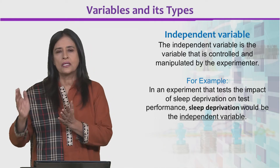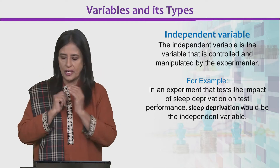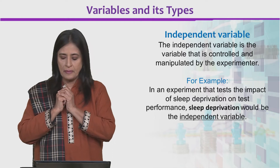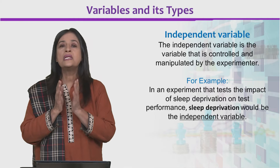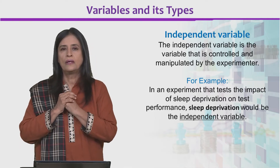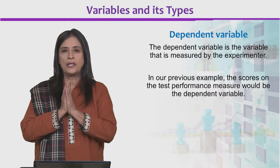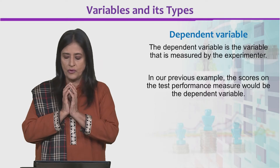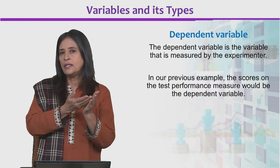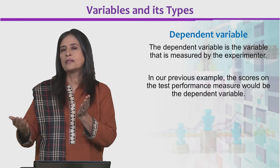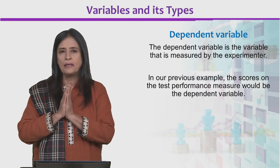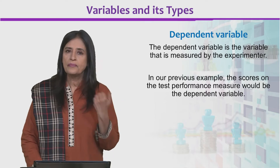How many correct answers are given? So we are manipulating and studying study time. One of the most popular experiments is sleep deprivation and its effect on test performance. Sleep deprivation is the independent variable. The dependent variable is what is experimentally measured to see what effect our controlled variable has had on another variable. Test performance is the dependent variable and sleep deprivation is the independent variable.